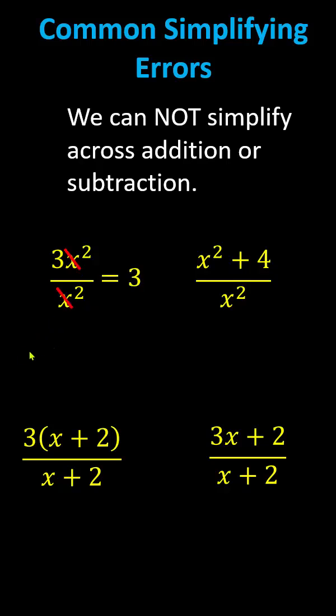For the expression on the right though, the x squares do not simplify because the x squared in the numerator is attached to the four by addition. Again, we cannot simplify across addition or subtraction. The expression does not simplify.